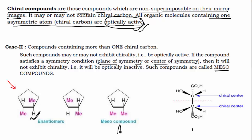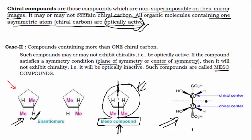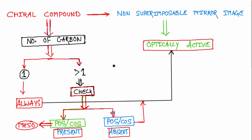Now consider this other compound. This carbon is a chiral carbon and this carbon is also a chiral carbon, in the same fashion as discussed. However, there is a plane of symmetry here. Because of this plane of symmetry, even though chiral carbons are present, this particular compound will not be optically active. These compounds are known as meso compounds. You can see other examples where chiral carbons are present but a plane of symmetry makes the compound a meso compound.